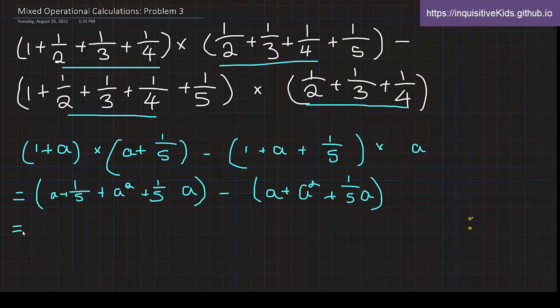So now what can we cancel out here? What is the same in each of these? Well, we have one-fifth a. We have a. And we have a squared. So what's left? The only one left is one-fifth. So one-fifth is our answer.